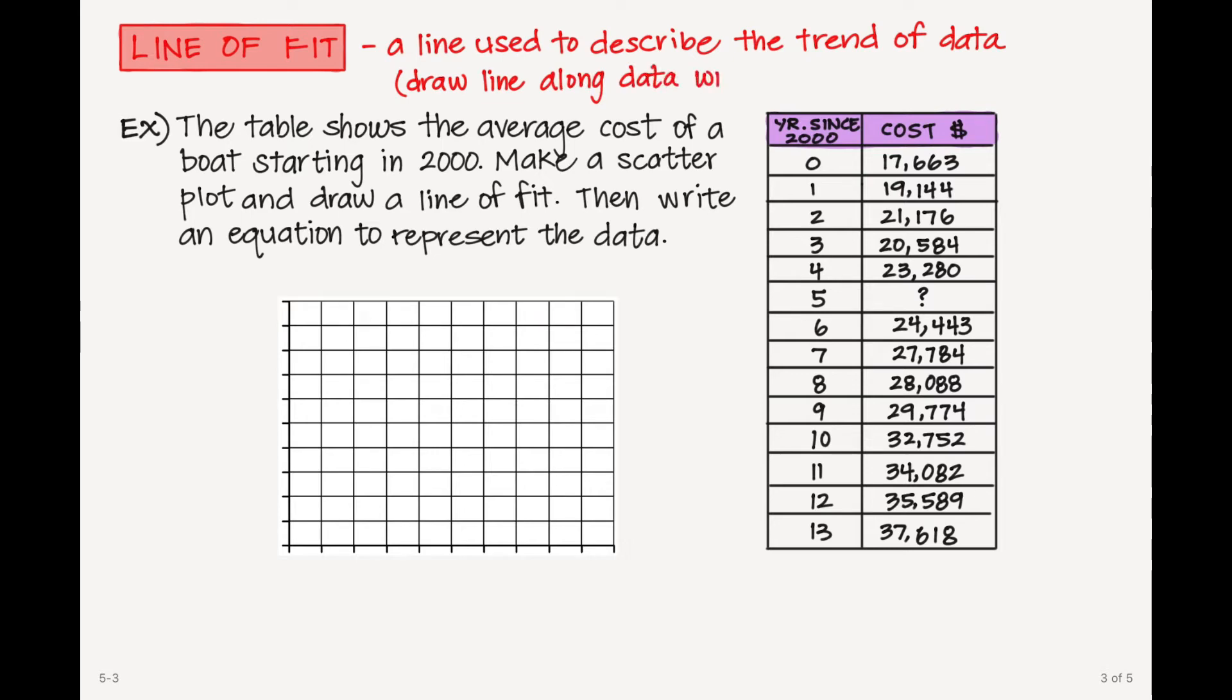And so when you do this, you want to draw a line along the data that has basically the same amount of values above and below your line. If there's no correlation, then there would be no line of fit.